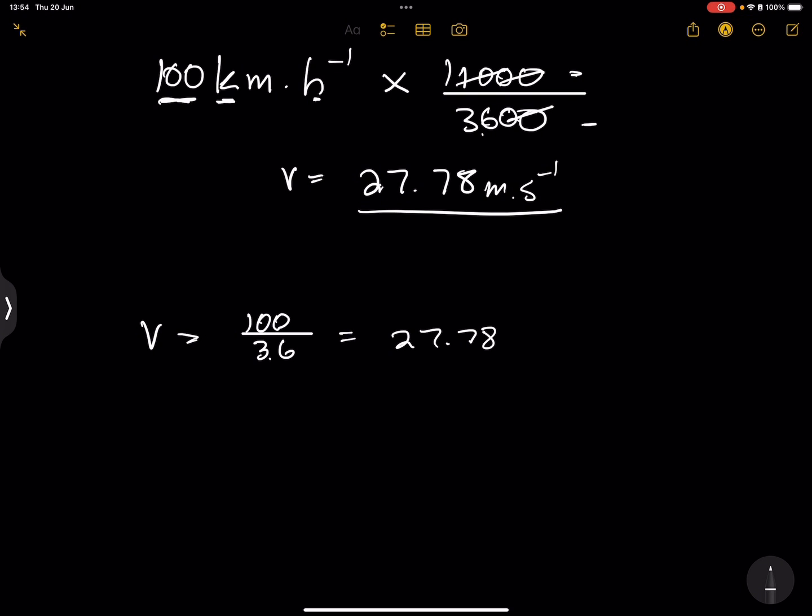So if we had velocity given to us in meters per second, let's just take 30 meters per second. And we want to convert this to kilometers per hour. So what do we do? We're going to do exactly the opposite.